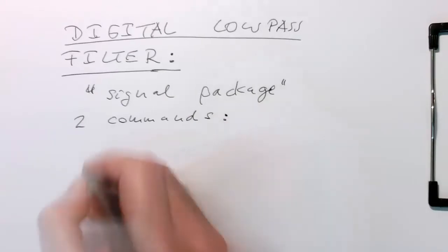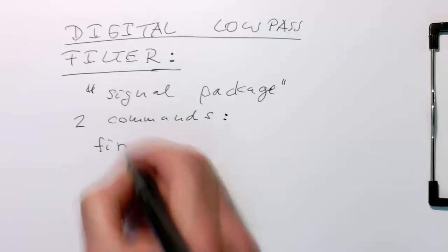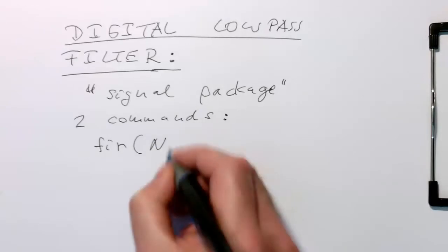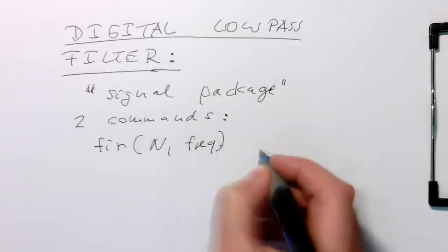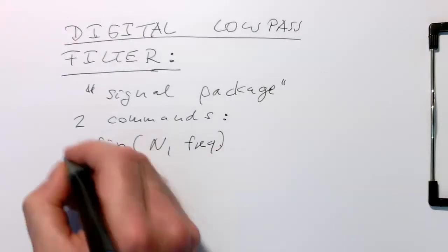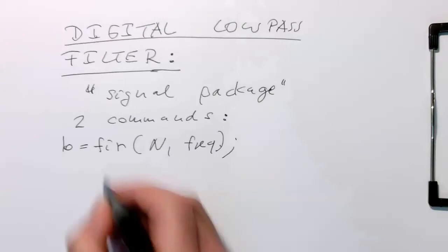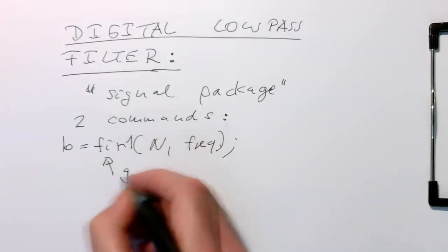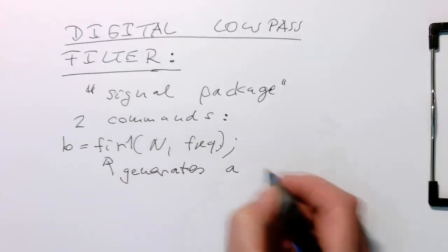So one command is called FIR1 and it has arguments N and a frequency. It just gives us a value. So this command, FIR1, generates a low-pass filter.